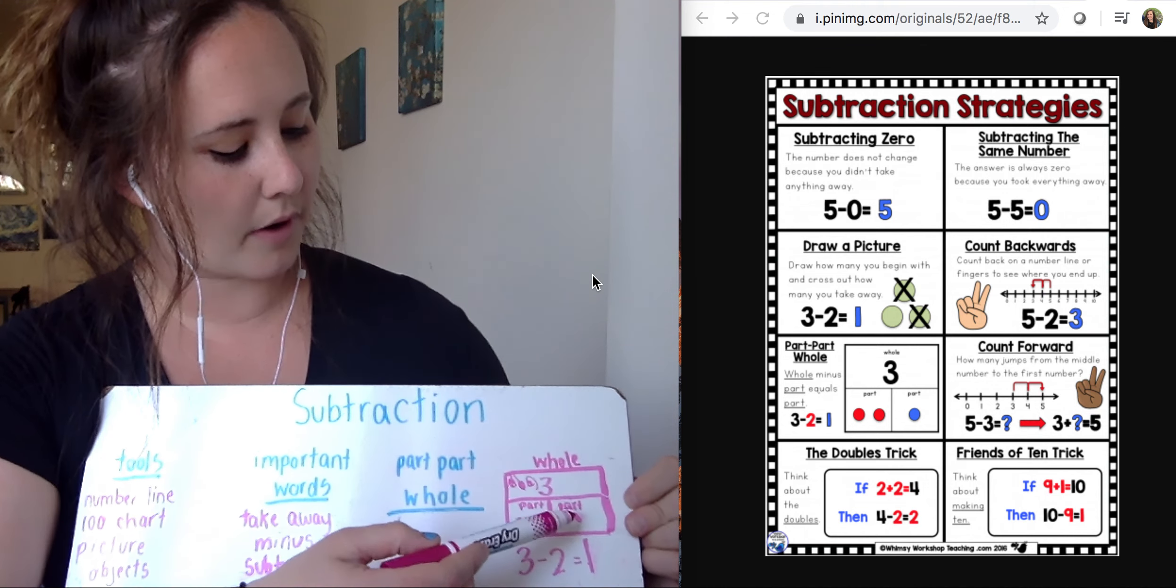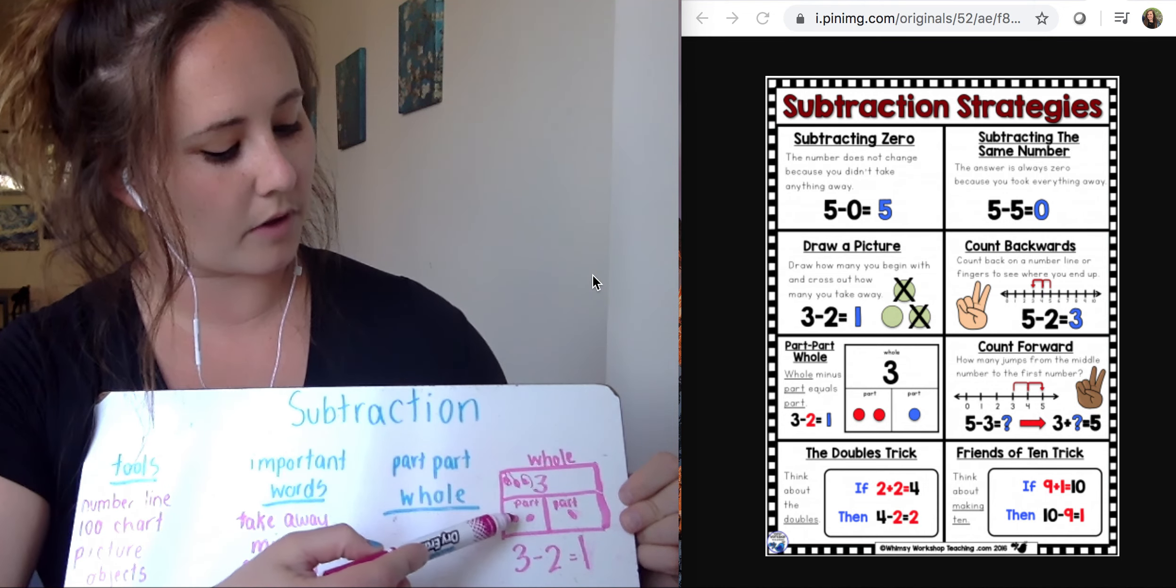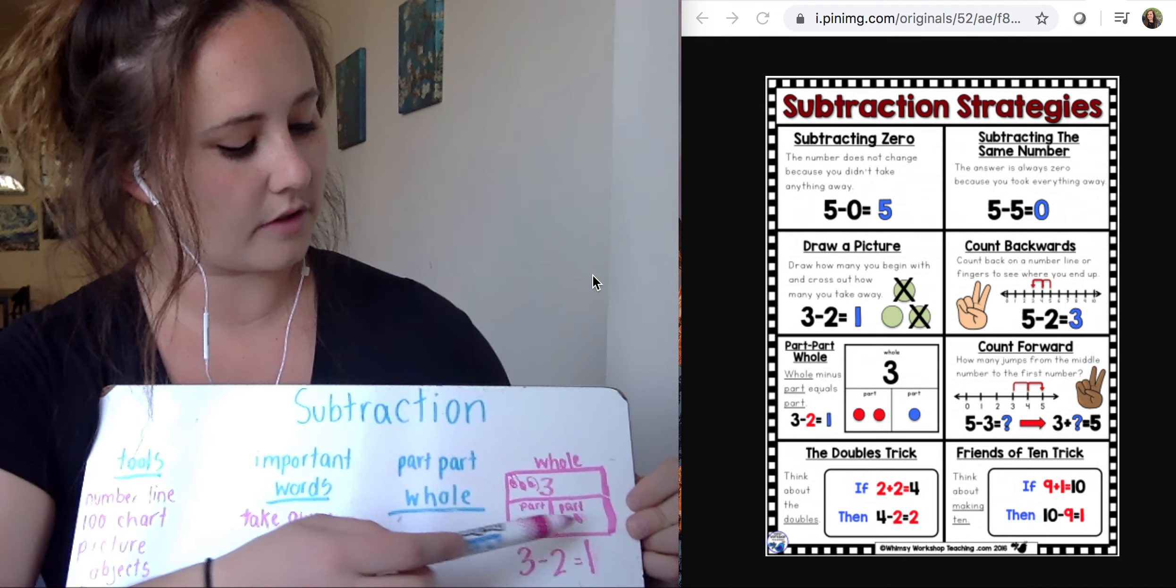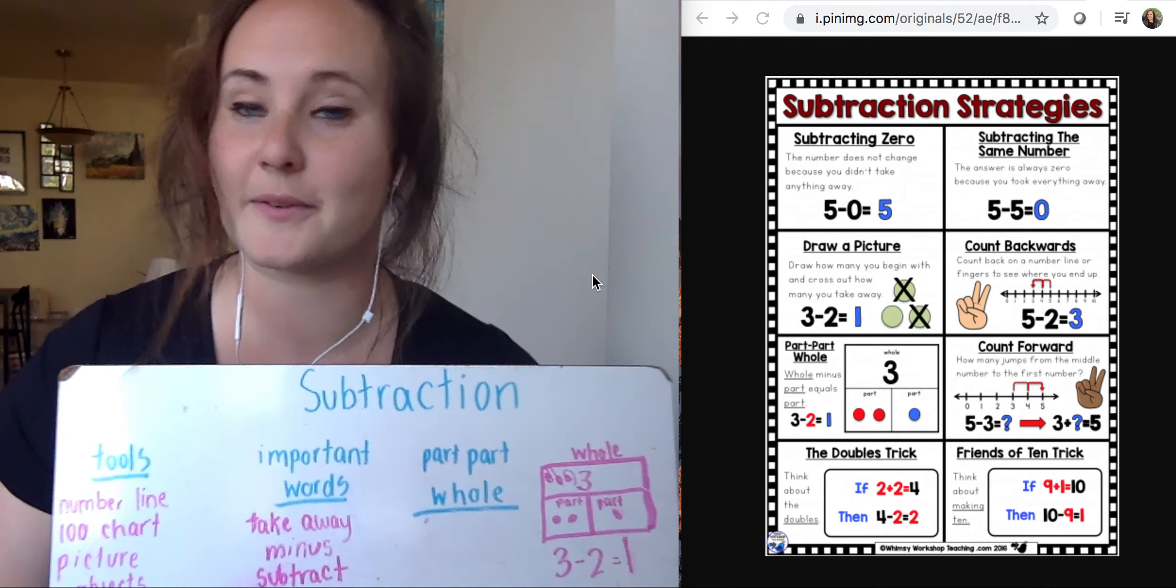So I could see that my part here, I have one, and my second part I have two. I can count those or add them up in my brain. One, two, three. And there is my whole. So there's one way we talked about.